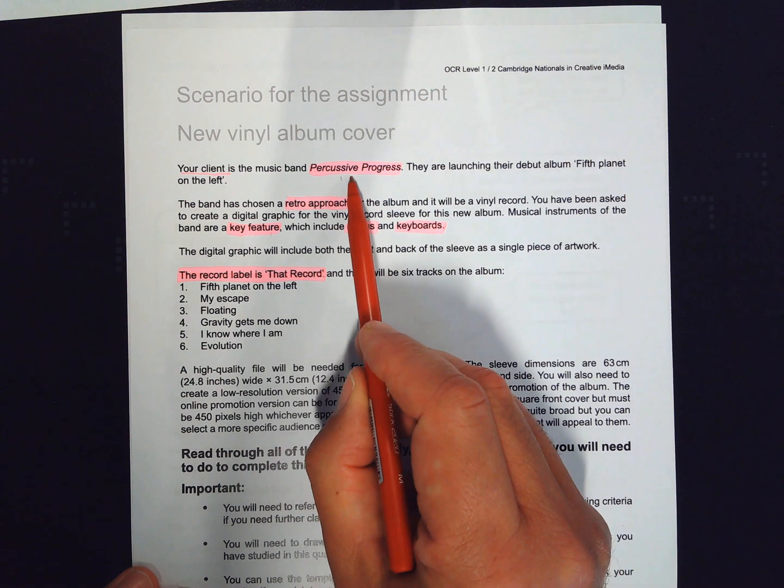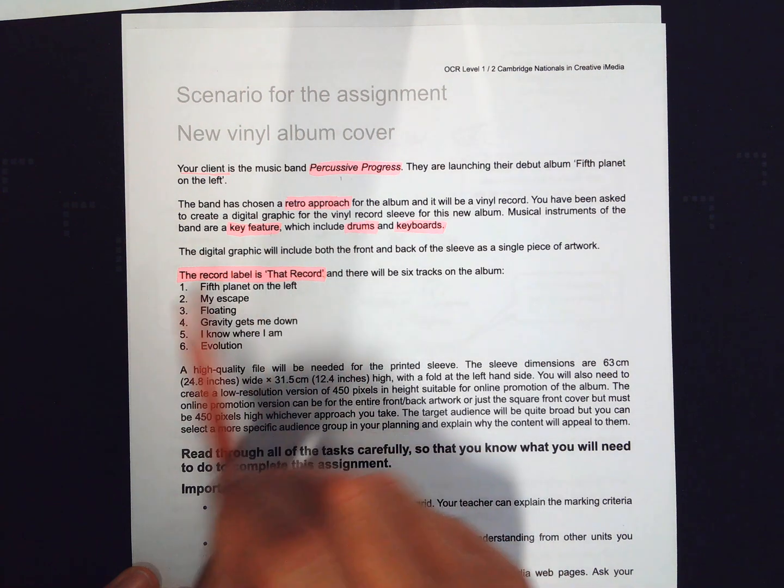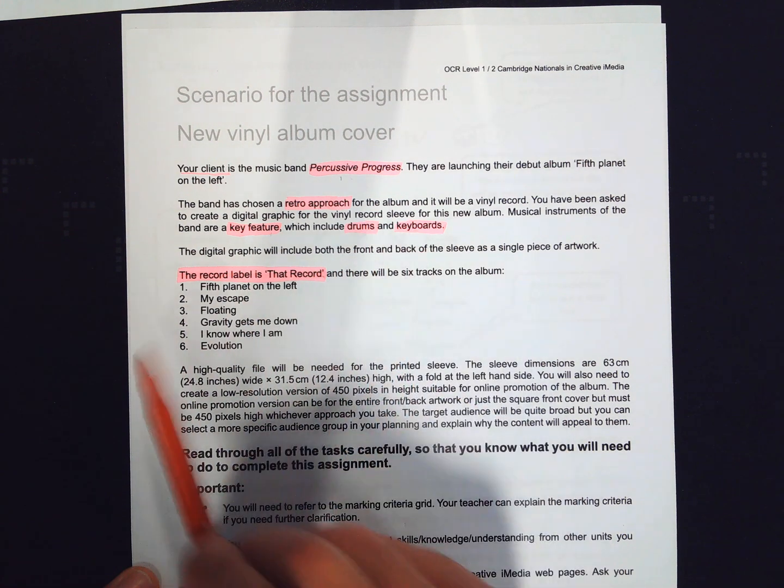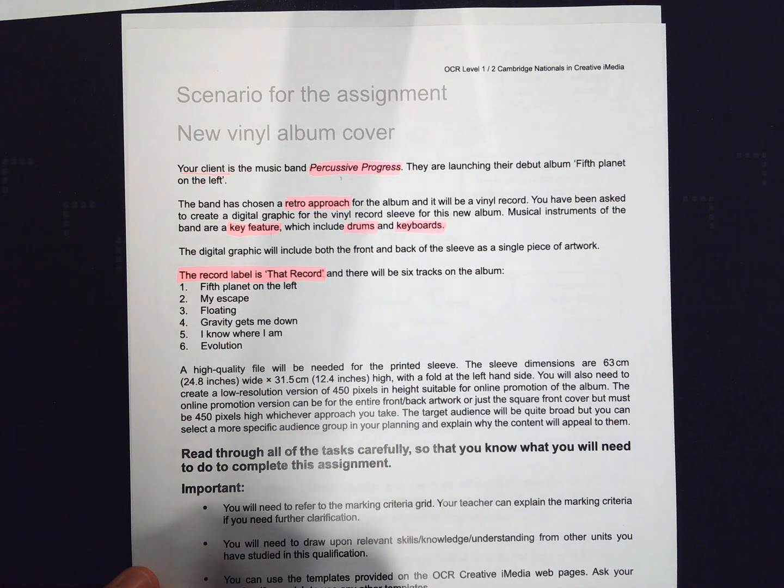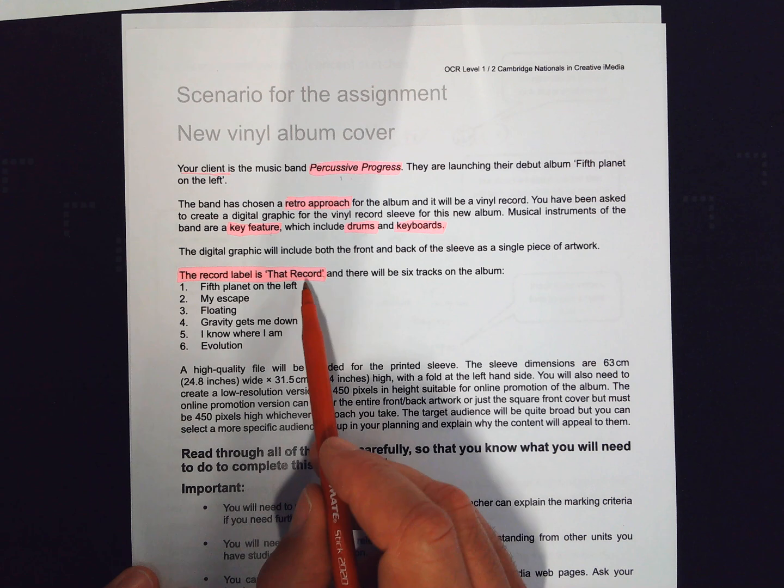The name of the client is Percussive Progress. They sell vinyl records. Key features of their identity are drums and keyboards, and they want to apply a retro approach to this design. There's also a record company that's publishing their work called That Record.